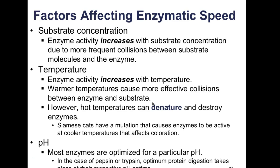However, there is a point at which temperature denatures or destroys the enzyme. Protein denaturation is when the protein is unraveled or unfolded. If temperature gets too high, the enzyme is destroyed and will no longer catalyze the reaction. Interestingly, Siamese cats have a mutation that causes enzymes to be active at cooler temperatures, which affects their coloration.